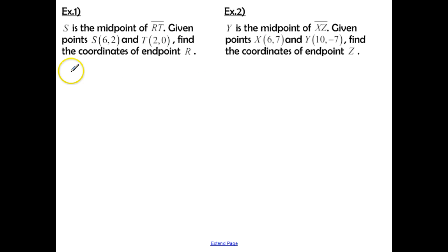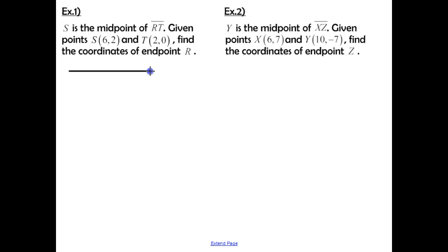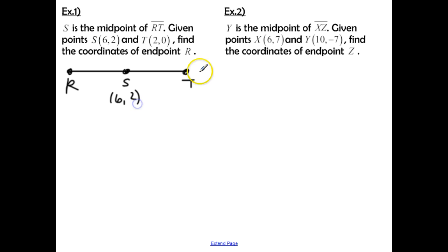Here are a couple more examples that are slightly different. This one says that S is the midpoint of RT. Given points S and T, find the coordinates of endpoint R. This time I don't give you the two endpoints and ask you to find the midpoint — I'm giving you the midpoint and one endpoint, and you need to find the other endpoint. It says S is the midpoint of segment RT. Point S has certain coordinates and point T has certain coordinates, and we need to find the x and y coordinate of point R.